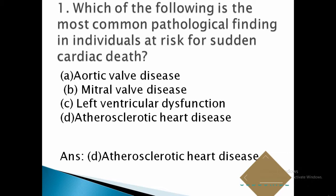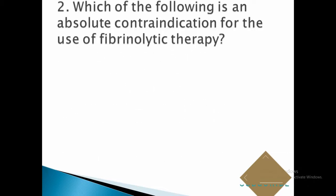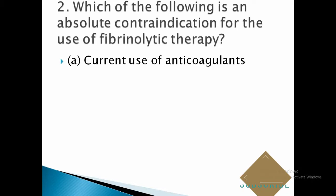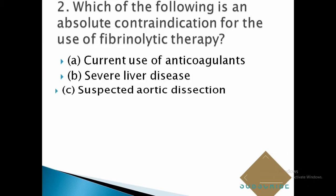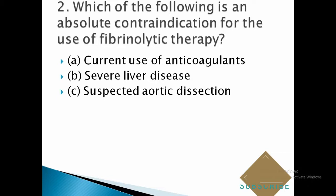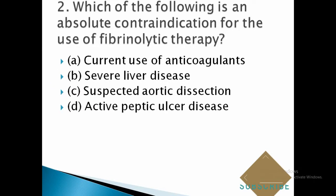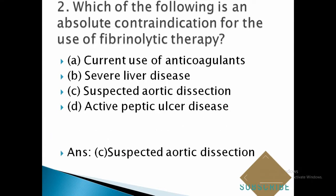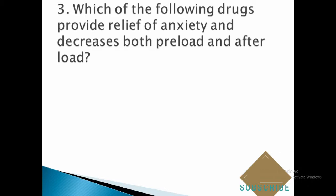Question number two: which of the following is an absolute contraindication for the use of fibrinolytic therapy? Options: A. current use of anticoagulants, B. severe liver disease, C. suspected aortic dissection, D. active peptic ulcer disease. The correct answer is C, suspected aortic dissection.